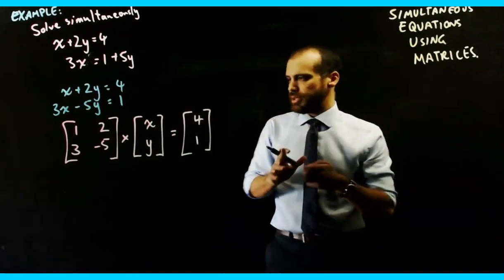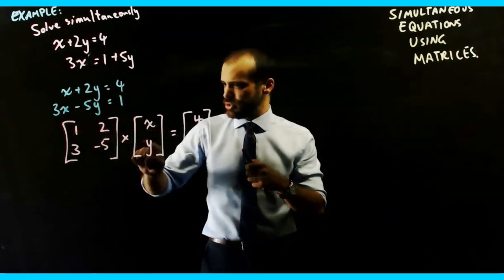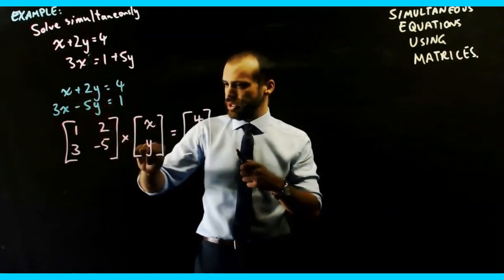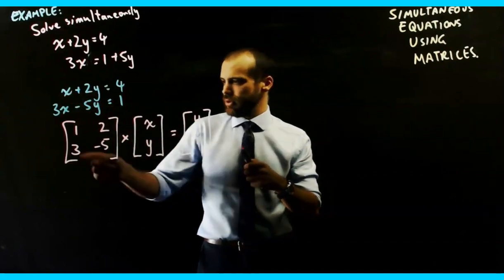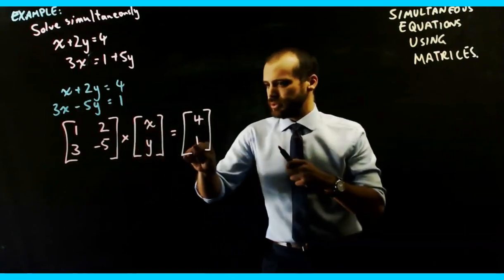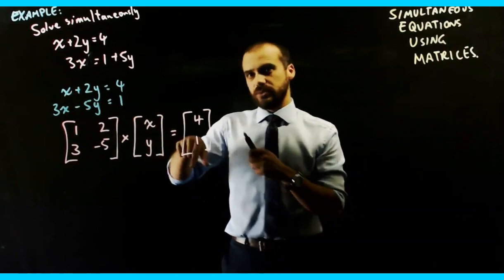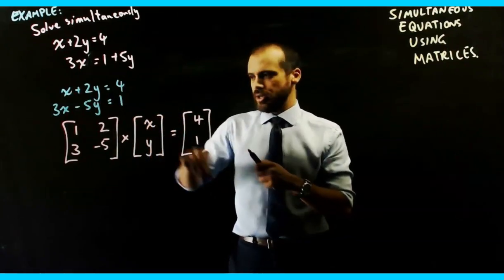So think about what's actually happening there. 1x plus 2y equals 4. 3x minus 5y equals 1. So it's just some matrix multiplication here, and x and y are our unknowns.